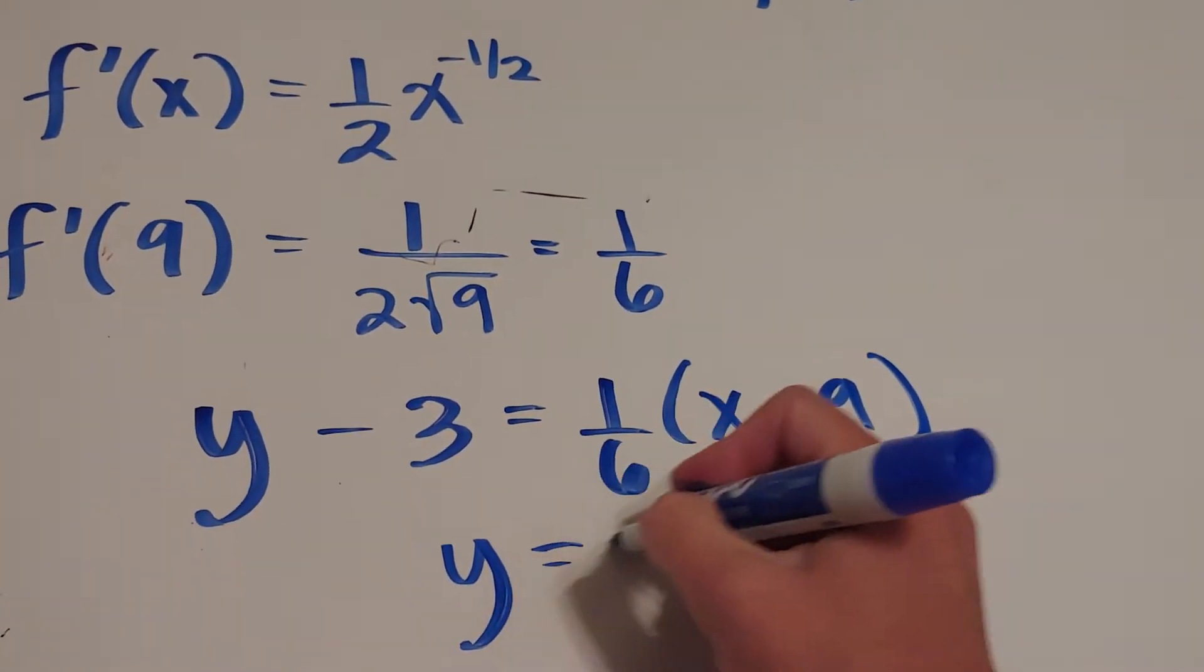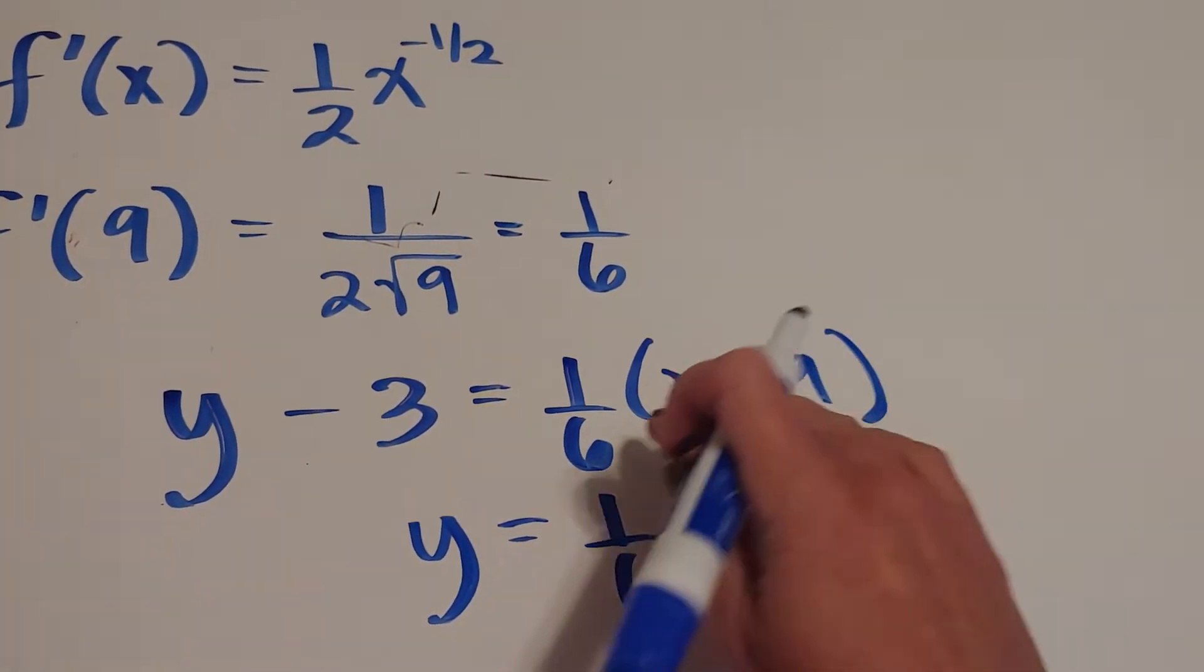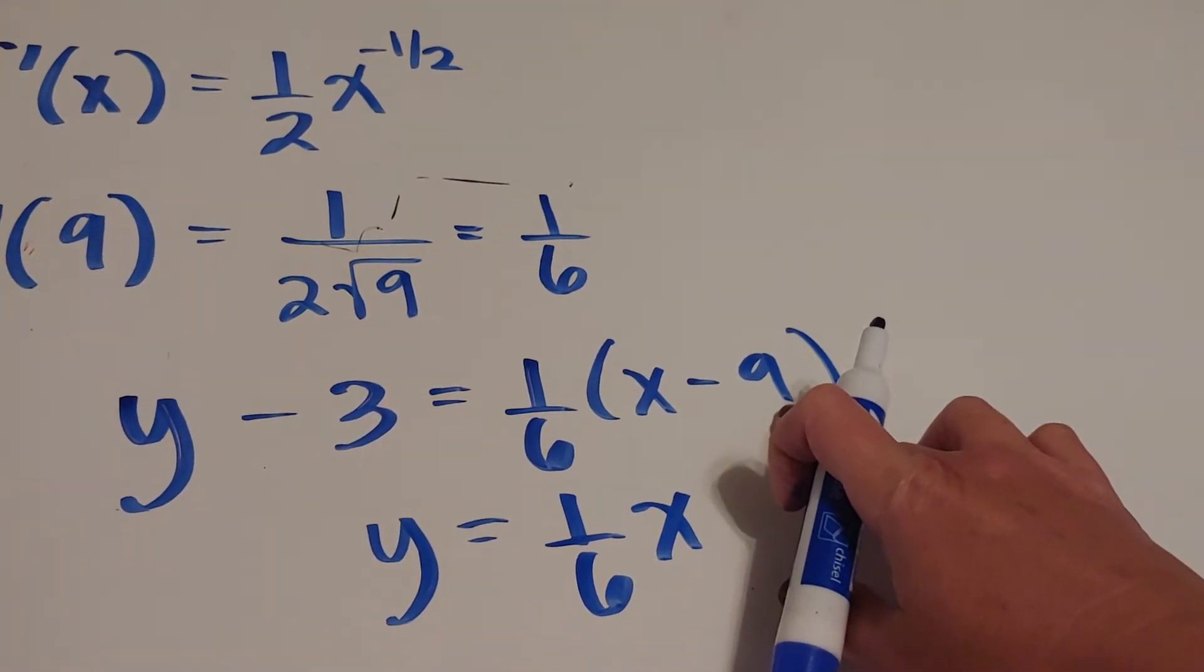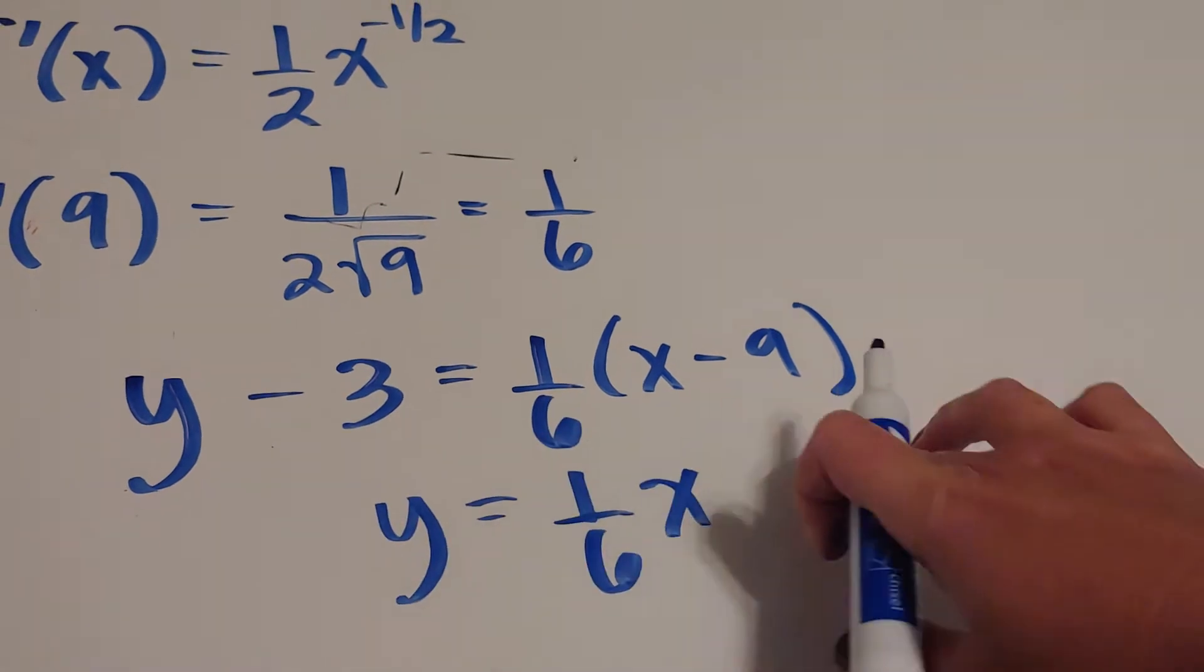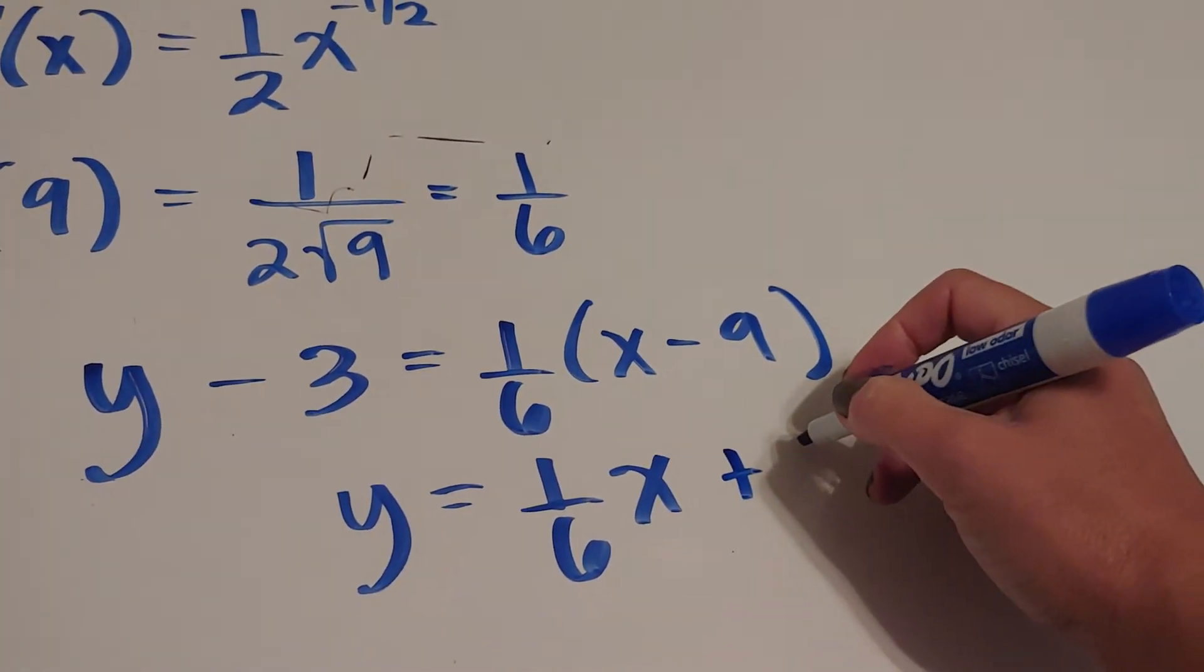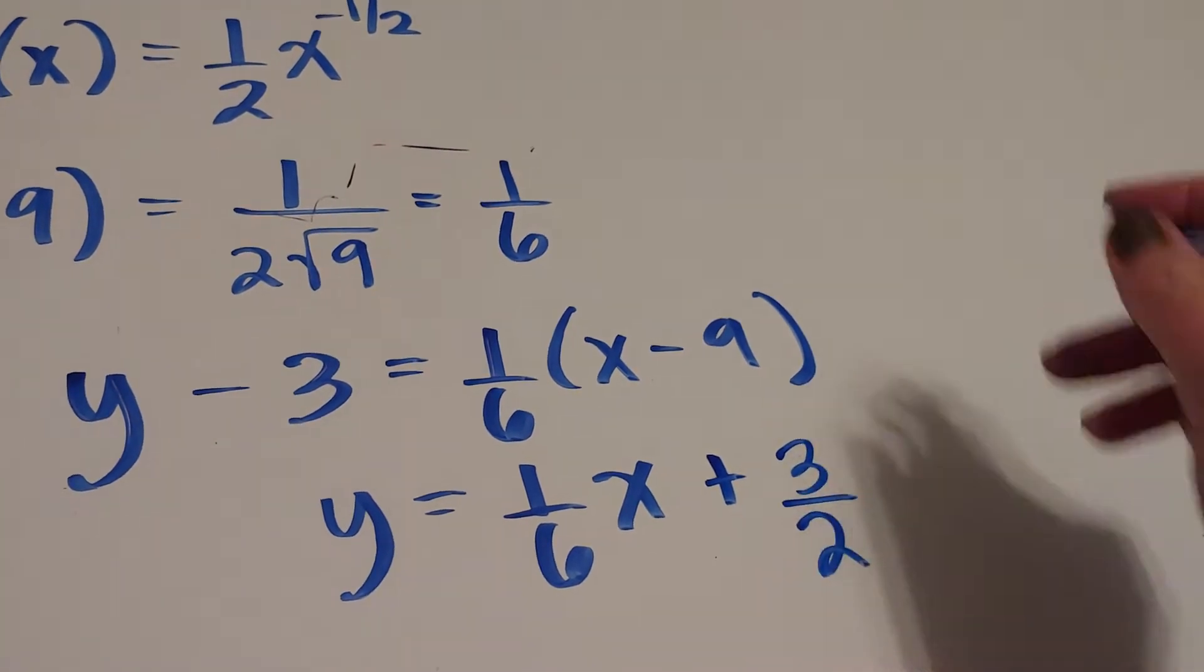Let's clean it up. One-sixth times nine is negative three-halves or negative 1.5. When I add three over, it's going to be positive three-halves or positive 1.5.